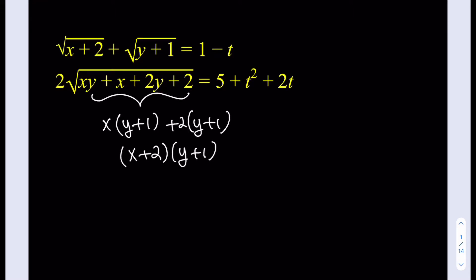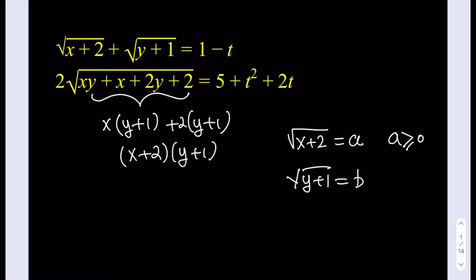We're going to use a very powerful method in math called substitution. Since the square root of x plus 2 and the square root of y plus 1 repeat, we can designate variables for them. Let the square root of x plus 2 equal a, where a is greater than or equal to 0. And let the square root of y plus 1 equal b, where b is also non-negative.